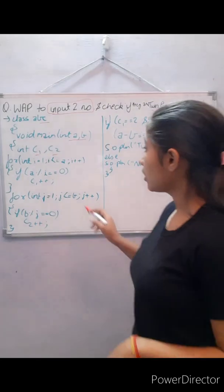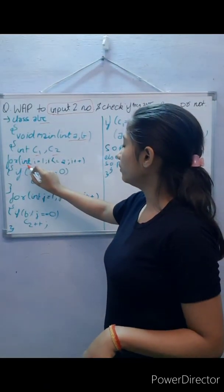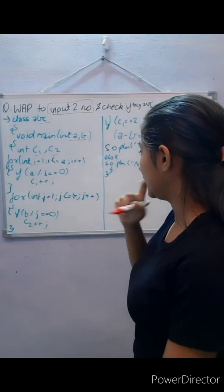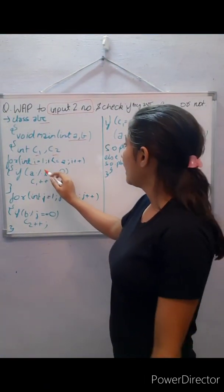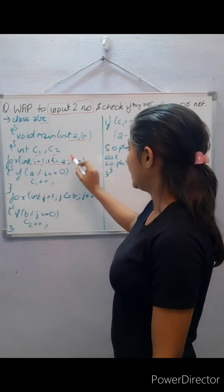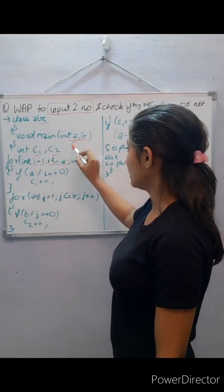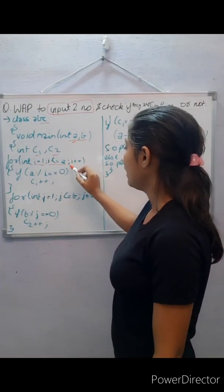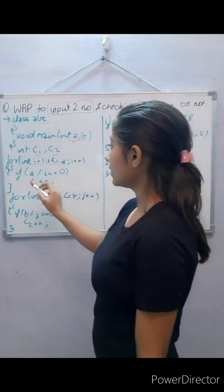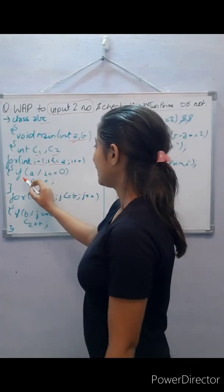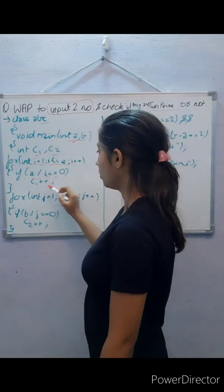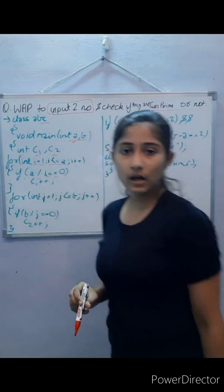We'll run a for loop for the first number. We take integer i, i is equal to one, i is less than or equal to a (the first number), and i plus plus. Then we put a condition: if a modulus i is equal to zero, we are going to count that number.